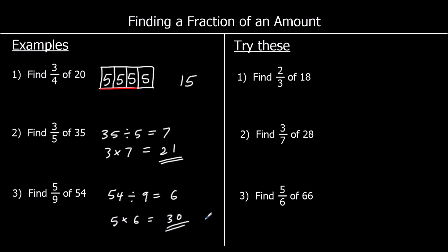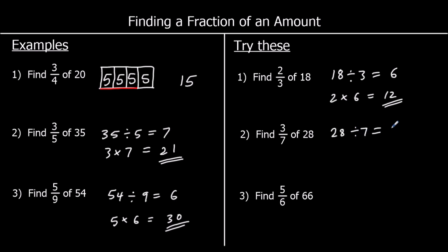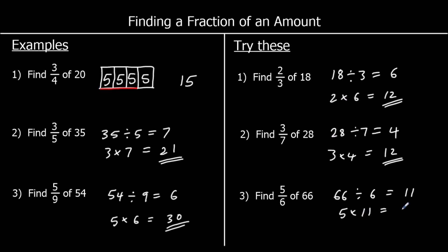Three for you to try. We're splitting 18 into thirds: 18 divided by 3 is 6, and we want 2 of them — 2 sixes are 12. Question 2: 3 sevenths of 28 — 28 split into 7 parts gives 4 each, and 3 fours are 12. Question 3: 5 sixths of 66 — split 66 into 6 parts gives 11 each, and 5 elevens are 55.